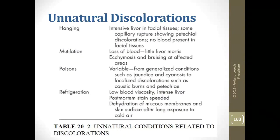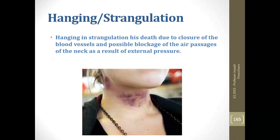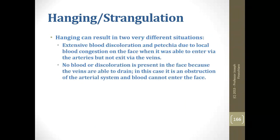Hanging and strangulation may rupture structures in the neck and can lead to two distinct situations. First: extensive blood discoloration and petechiae with blood congestion on the face — blood enters via the arteries but cannot exit via the veins. Second: no blood or discoloration present in the face because the veins can drain but nothing could flow in. Those are two conditions you need to know — I'd flash-card them.